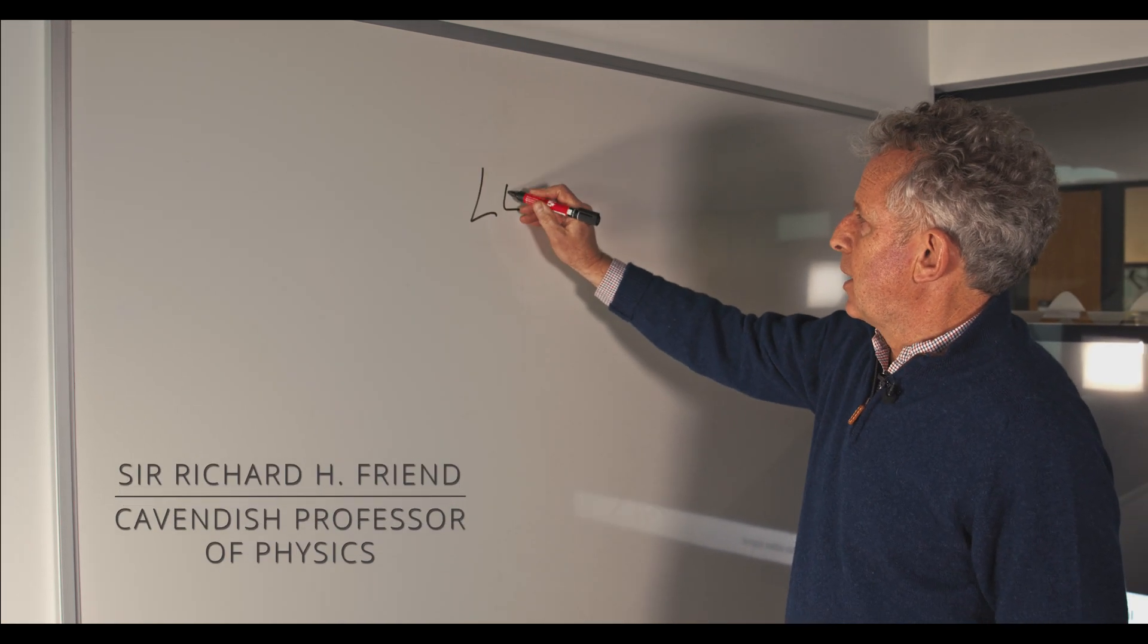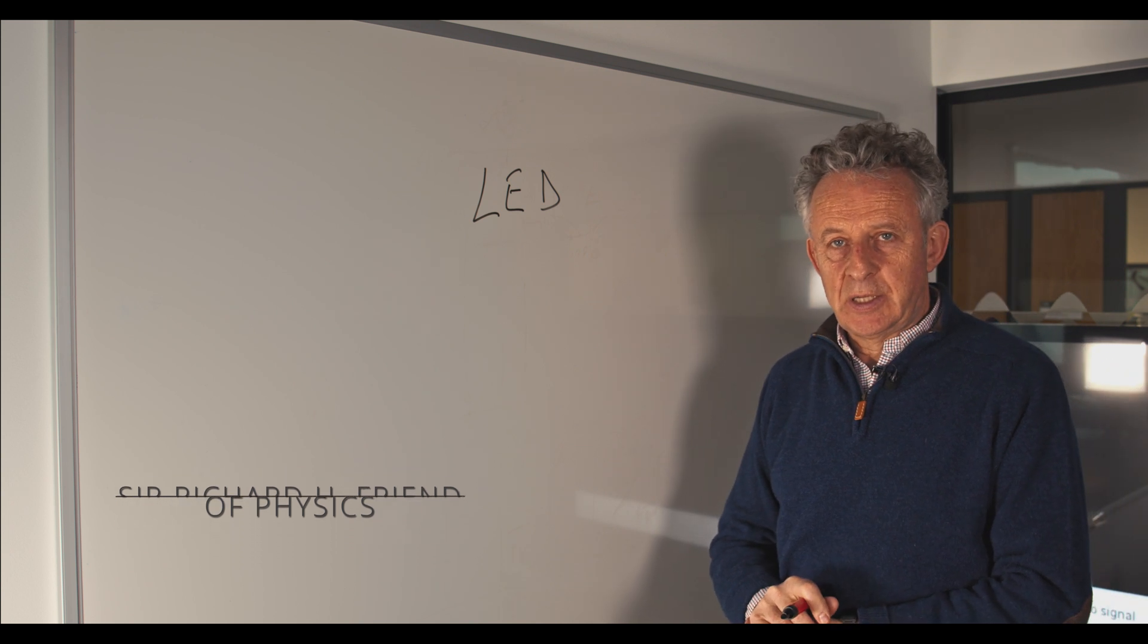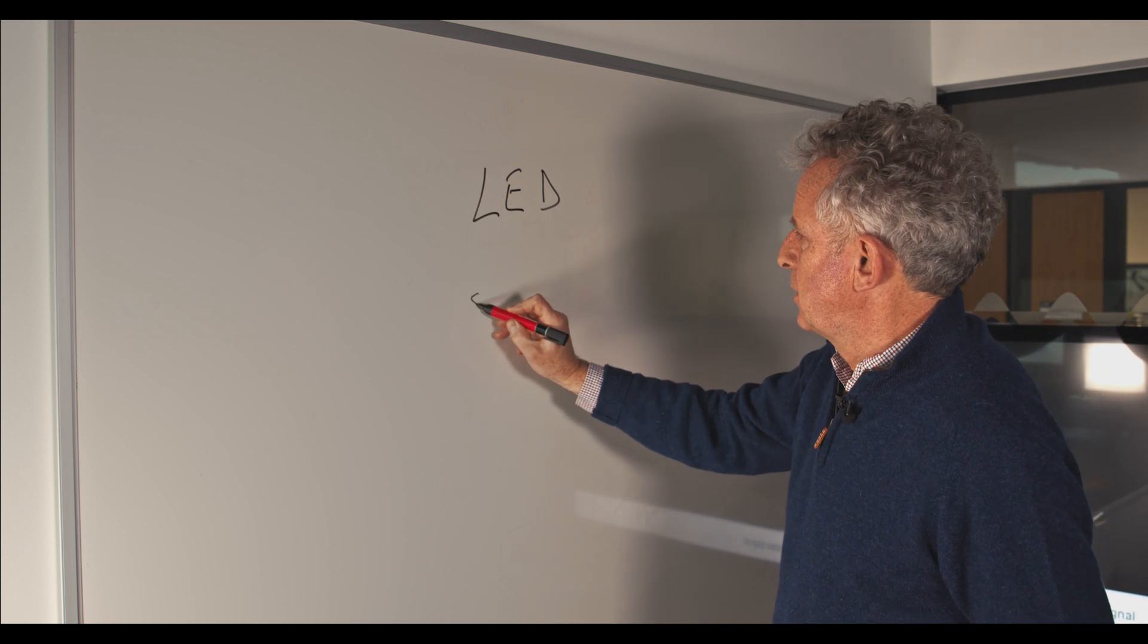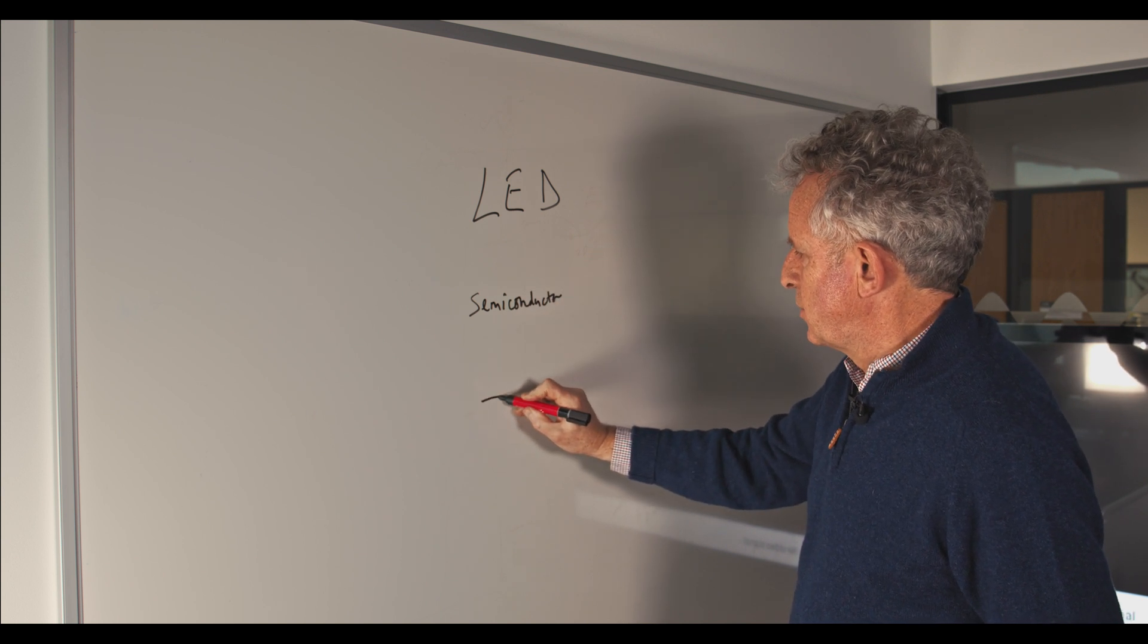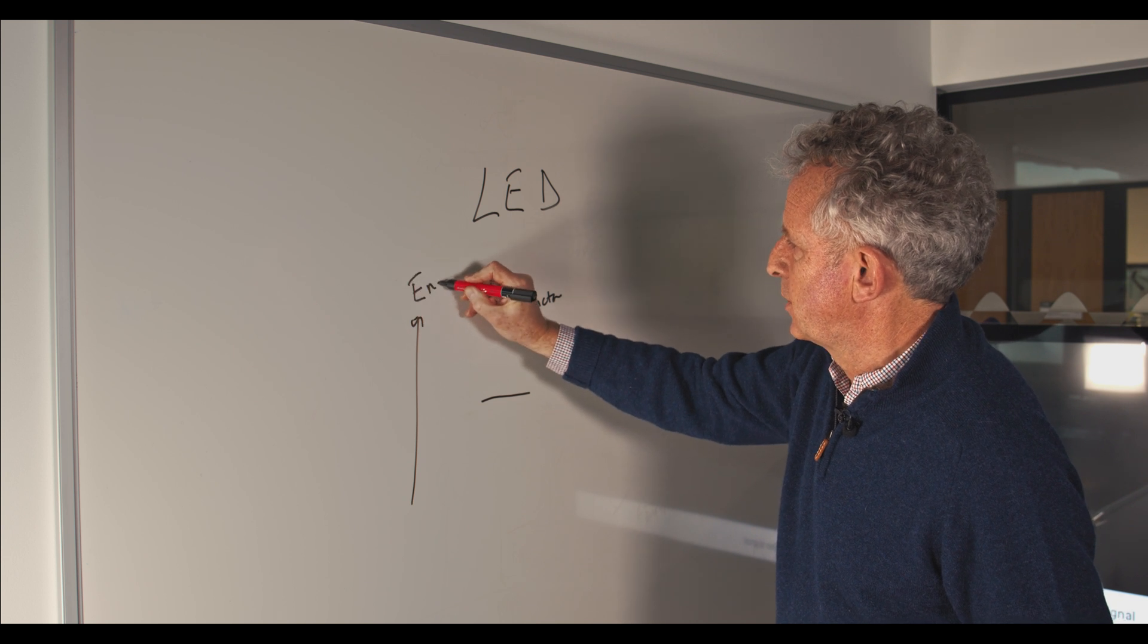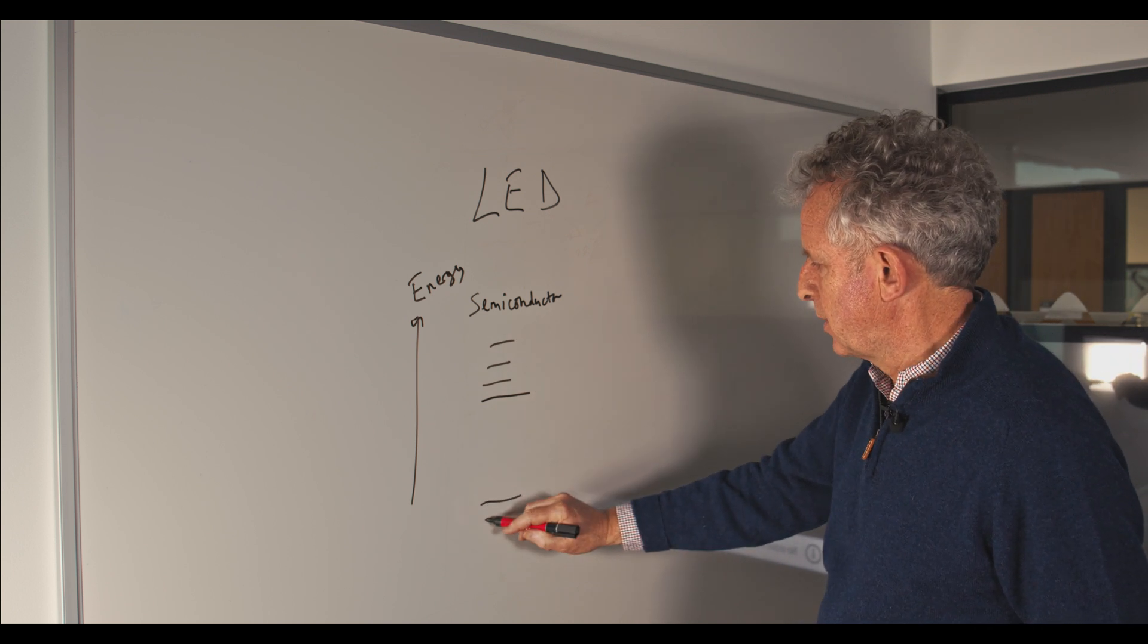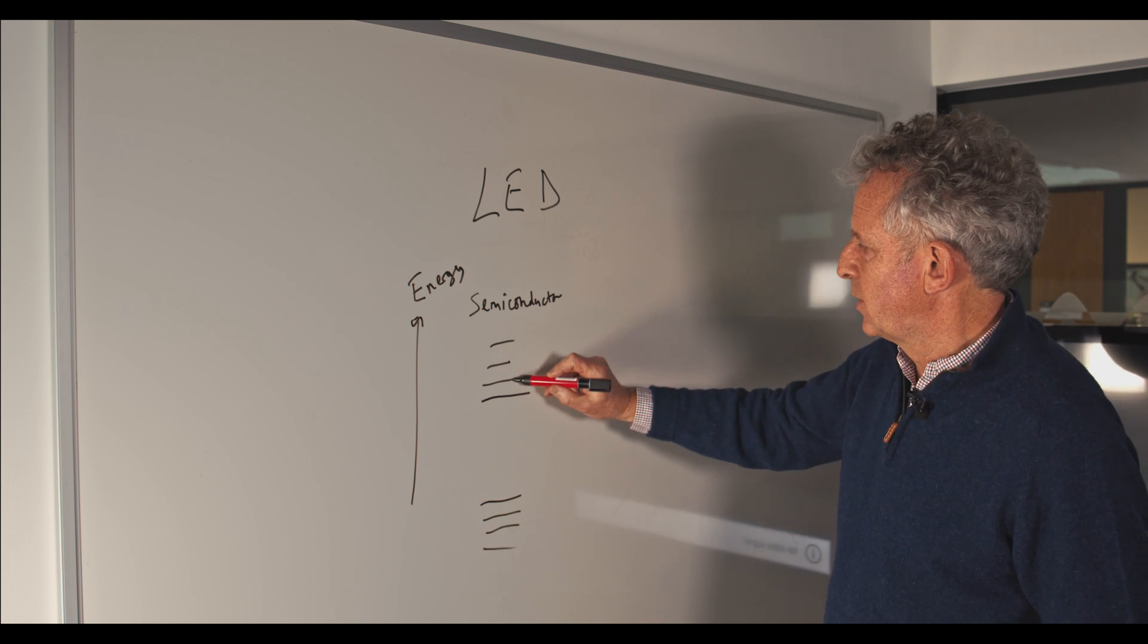Let me explain how we make a light emitting diode from a molecular semiconductor as we do with an OLED. So we start with the semiconductor which has the characteristic that if we plot energy vertically, we have a load of energy levels that are empty, and then we have what we call the semiconductor gap, and below that we have energy levels that are filled.